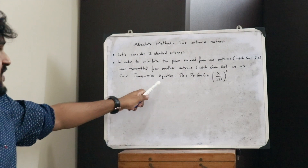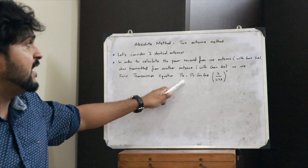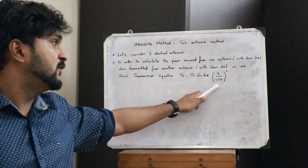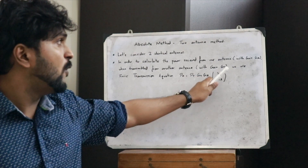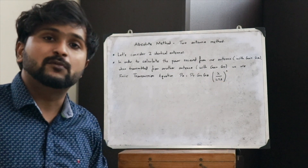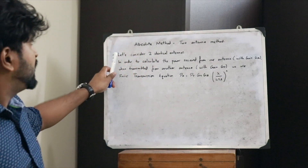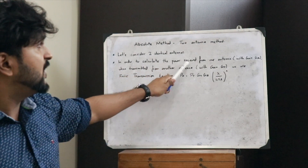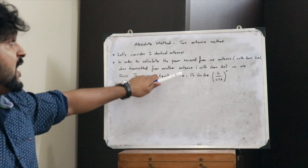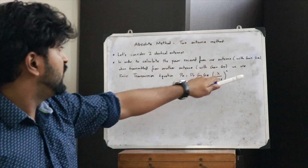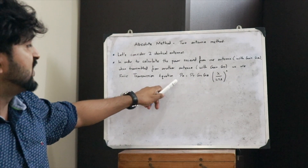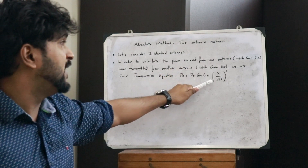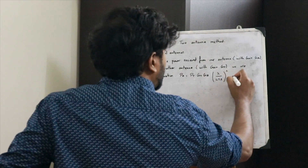The Friis transmission equation says that the received power Pr is equal to Pt times the gain of the transmitting antenna Gt times the gain of the receiving antenna Gr, all multiplied by (λ / 4πr) squared. Let this be taken as equation 1.